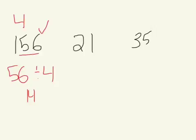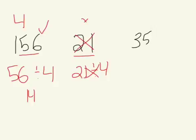Let's look at 21. Now there's only 2 digits in 21, so we have to look at both digits. We go 21 divided by 4 — does 4 evenly divide into 21? No, it does not. 4 can't go into 21 evenly, therefore 21 is not divisible by 4. For 35, we look at both digits and say 35 divided by 4. 4 does not go evenly into 35, so therefore it is not divisible by 4.